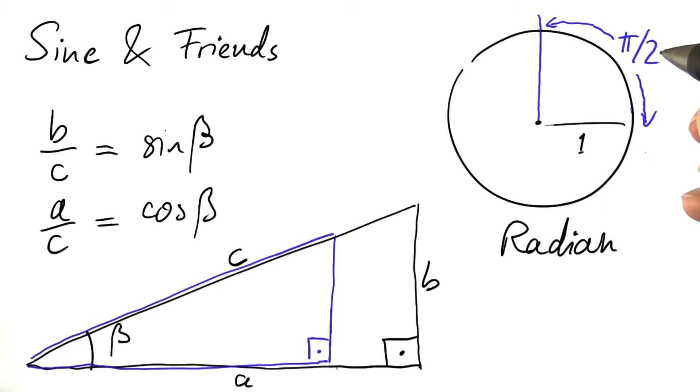90 degrees become pi divided by 2, 3.14 and so on divided by 2. A very ugly number. If I want to specify 45 degrees, that's of course just half of that number, pi divided by 4.